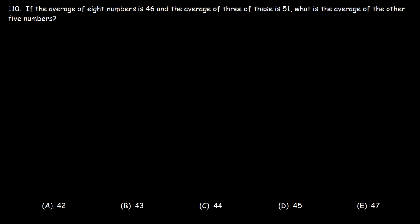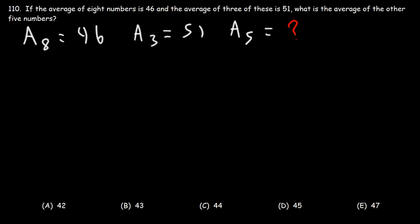Number 110. If the average of eight numbers is 46 and the average of three of these is 51, what is the average of the other five numbers? A8 is 46, a3 is 51, and we're looking for a5. Based on the process from the last two problems, let's write an equation using the sums: the sum of eight numbers equals the sum of three numbers plus the sum of five numbers.